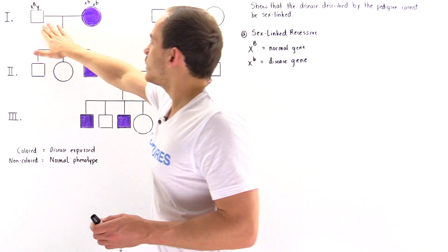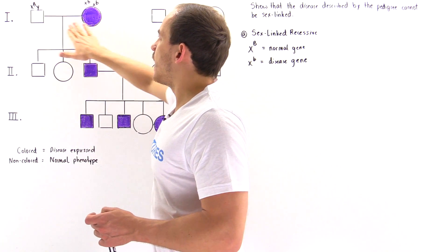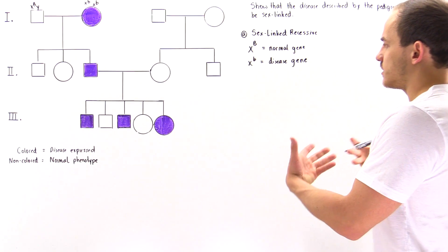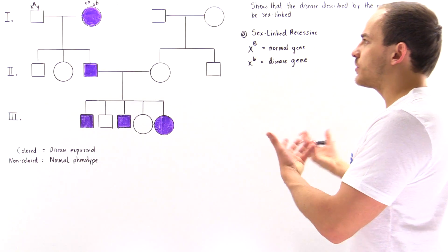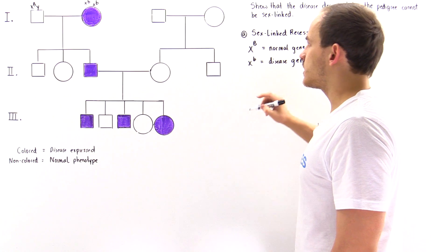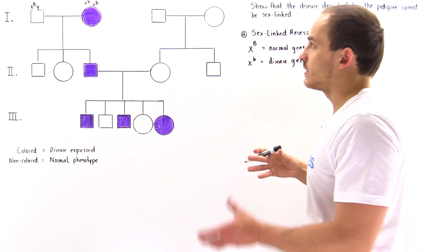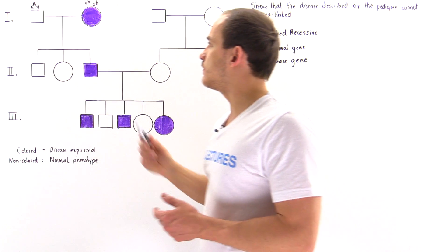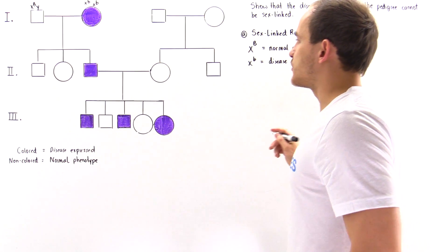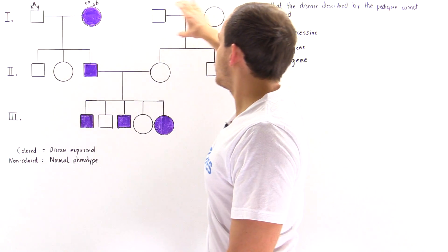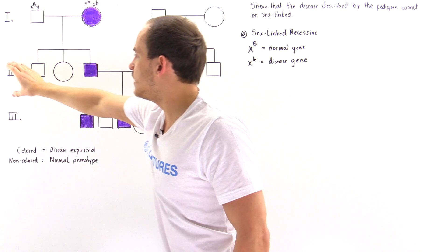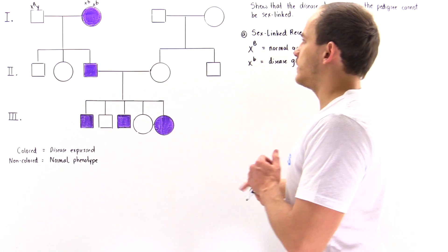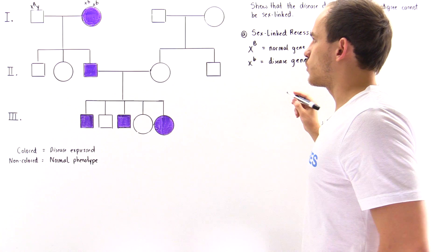Let's carry out the following crossing process between these two individuals and discuss what the distribution of genotypes of the offspring produced would be, and see if that's consistent with the information given in this pedigree. Remember, generation one are these individuals, generation two are these individuals, and generation three are these individuals.